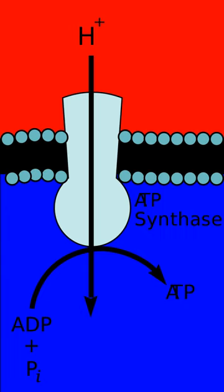The electron transport chain comprises an enzymatic series of electron donors and acceptors. Each electron donor will pass electrons to a more electronegative acceptor, which in turn donates these electrons to another acceptor, a process that continues down the series until electrons are passed to oxygen, the most electronegative and terminal electron acceptor in the chain. Passage of electrons between donor and acceptor releases energy, which is used to generate a proton gradient across the mitochondrial membrane by actively pumping protons into the intermembrane space, producing a thermodynamic state that has the potential to do work.